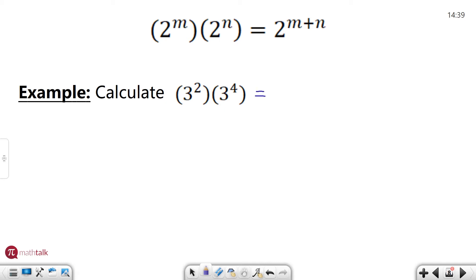We have 3 squared times 3 to the fourth. So the base is the same, it's 3, and we can just basically add the exponents together. So 3 to the 2 plus 4 which in this case is 3 to the sixth and that's our answer.